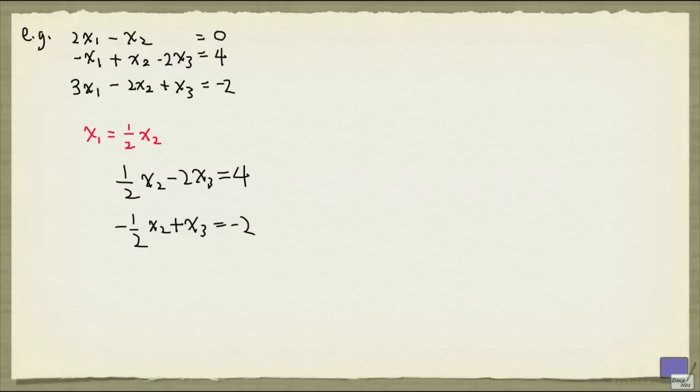But now, if I look at these two equations, they form a system with two unknowns and two equations. It has one fewer variable and one fewer equation than the original system. And again, we can apply the same idea.